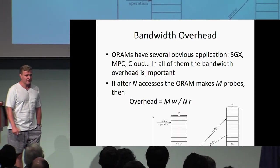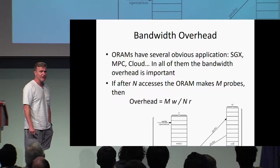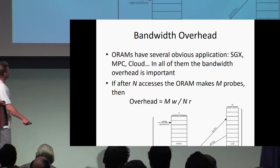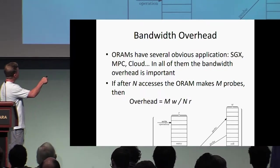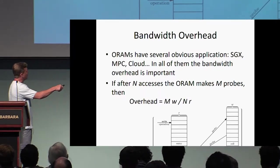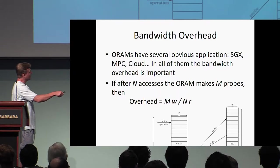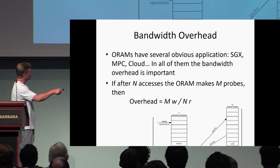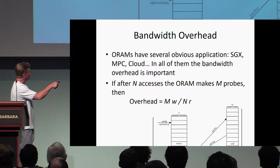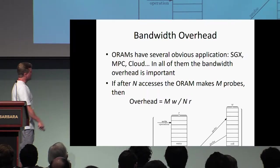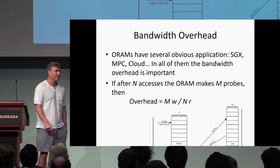An important notion is the bandwidth overhead: how much extra communication or memory accesses are needed to hide the real access pattern made onto the simulated array. If we take a sequence of n accesses to the array that generates m probes to implement it, then the overhead is m divided by n — the amortized overhead. If there's a difference between the word size of the physical memory W and the simulated one R, we include that in the overhead, so it becomes m times W divided by n times R. In general, it's the number of probes divided by the number of operations, and we want to keep that small.